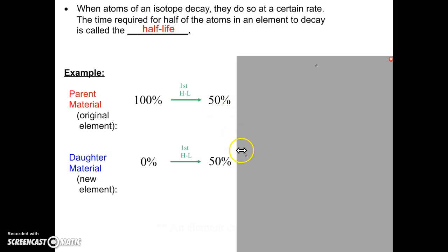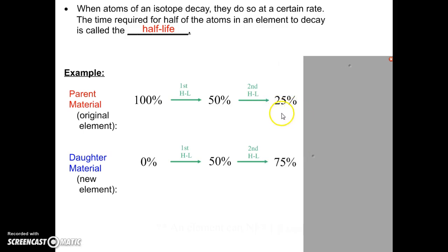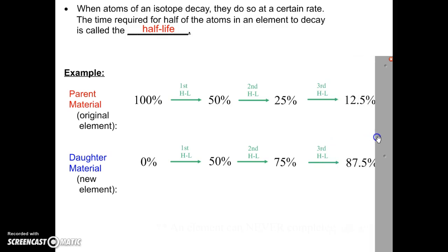After a second half-life, we're going to lose another half of the parent. So now there's 25% left of the parent and 75% of the daughter. It still equals 100%. After a third half-life, we're going to lose another half of the parent. So now we only have 12.5% of that parent material left. The rest has decayed into the daughter.